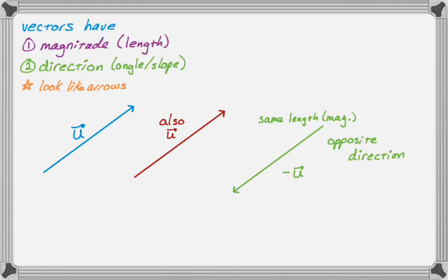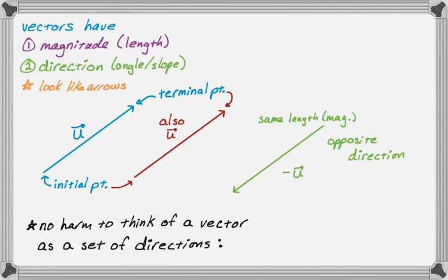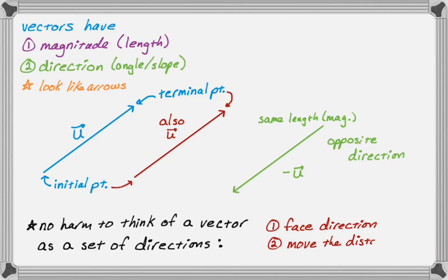Just to recap: initial points are the ends that don't have the arrow on them, and terminal points are the ones that do have the arrows. That terminology is important for what we're going to do. You'll find it helpful to think of a vector as just a set of directions — face a certain direction and then move the distance or length of the vector. That's a little bit of the background on vectors before we start adding them.